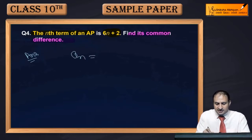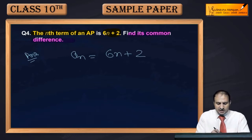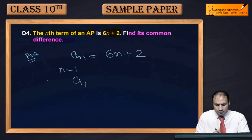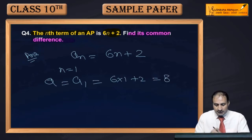Put n equal to 1 to find the first term a1. So a1 equals 6 into 1 plus 2, that is equal to 8.